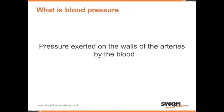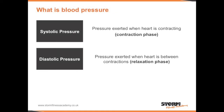Blood pressure is the pressure exerted on the walls of the arteries by the blood as it runs through them. We have systolic blood pressure and diastolic blood pressure. Systolic pressure is the pressure exerted when the heart is contracting — what we refer to as the contraction phase. Diastolic blood pressure is the pressure exerted on the heart between contractions, which is when the heart is relaxing — what we call the relaxation phase.